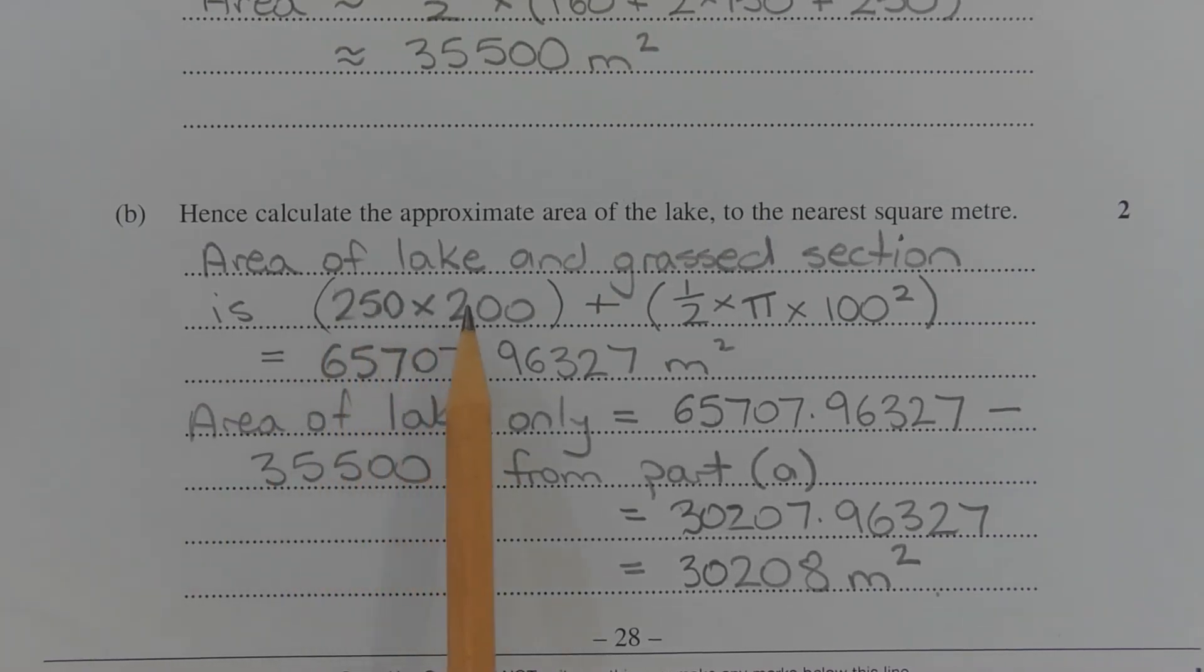The area of the lake and the grassed section is 250 times 200 plus half times pi times 100 squared, which equals 65,707.96327 square metres. We'll leave the rounding to the very end.